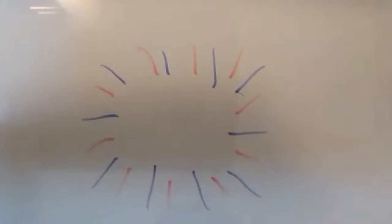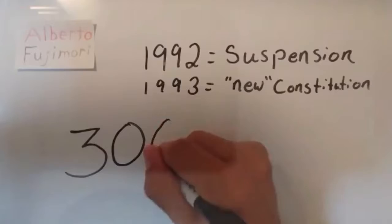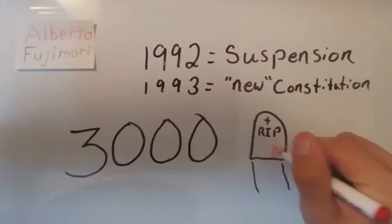While in office, Fujimori was accused of performing various questionable acts. In 1992, he suspended the Peruvian constitution. By 1993, a new constitution was drafted, which enabled Fujimori to seek re-election. And while in office, well over 3,000 political murders took place.